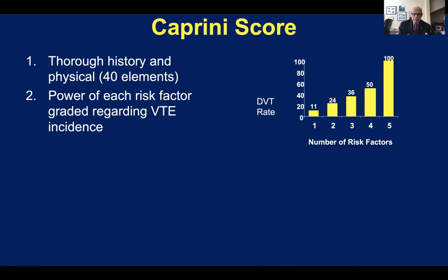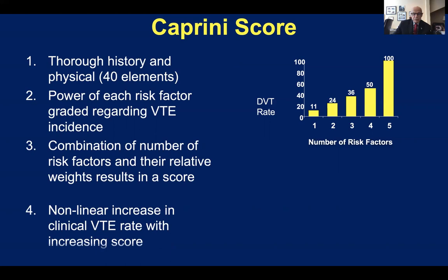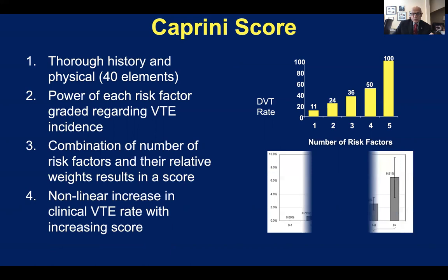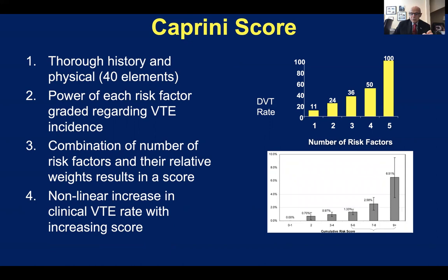We also know that the power of each risk factor is important. Bed rest is a low risk of thrombosis; esophageal and pancreatic cancer, very high risk. Taking these weights and combining with the number of risk assessment factors, we come up with a score, and the score represents a nonlinear increase in clinical VTE rate with increasing score. In general surgery, the venous thromboembolism rate goes up, and when you get over eight, there's a very high incidence — that's where the cut point is.